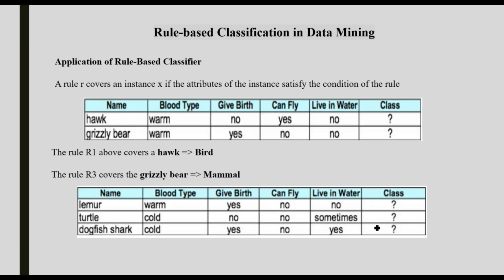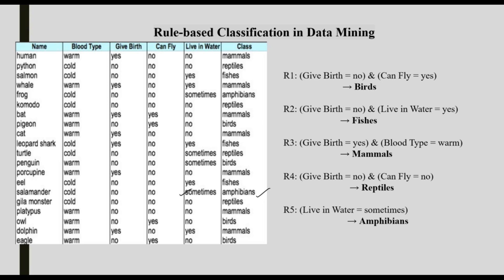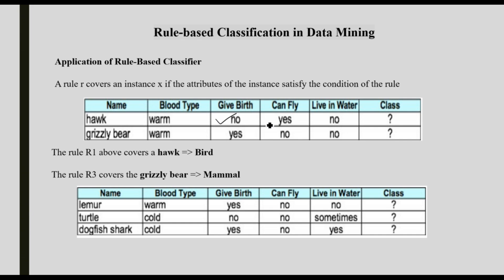Now how do we apply these rules? We apply them to identify the class of a new record. For example, take a hawk: blood type is warm, can fly is yes, give birth is no. We apply rule one — give birth = no, can fly = yes — and the hawk belongs to the bird class. That is bird classification, and we use the rules to predict it.